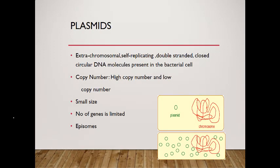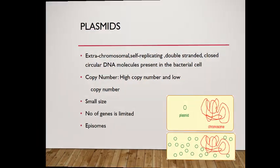What are plasmids? These are the extra chromosomal self-replicating, double-stranded, closed, circular DNA in bacteria. They have high and low copy numbers. They are small in size. There is no limit of genes. They also have episomes.